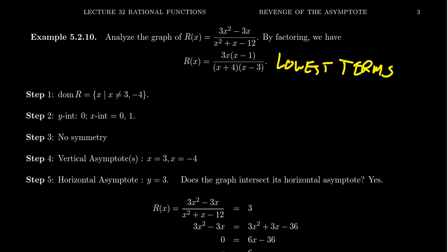Each of these factors appears with a multiplicity of 1 in the denominator. Since these have odd multiplicity, we are going to cross infinity at these vertical asymptotes — meaning the function goes to opposite infinities on either side.